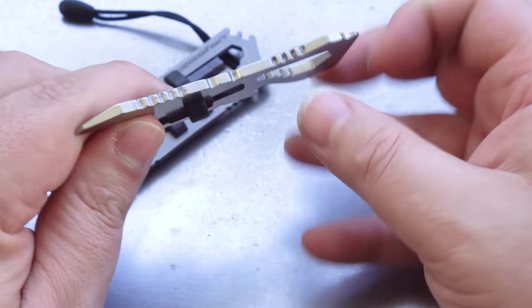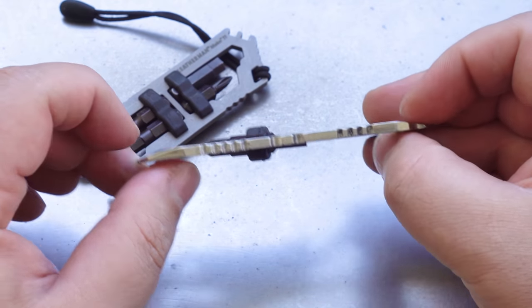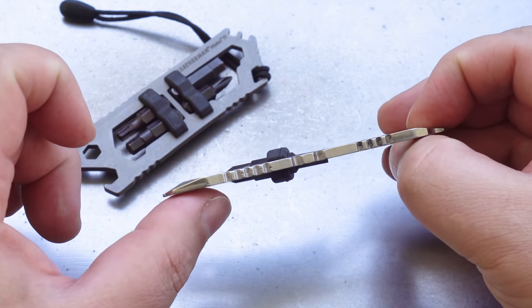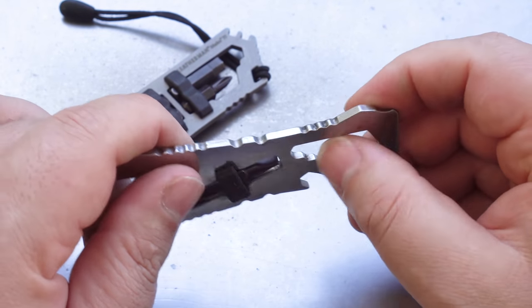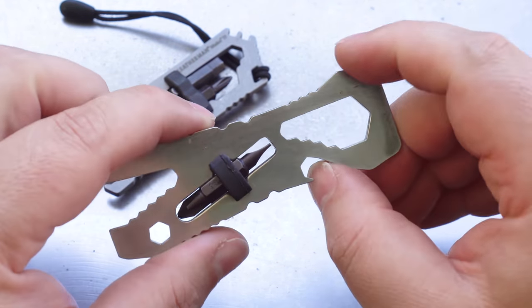It's mainly to do with the profile and how thin it is. There just isn't enough meat on this to get a good purchase without hurting your hands when you're trying to turn the bolt. The teeth on the wrench though does do a really good job of actually grabbing the bolt.